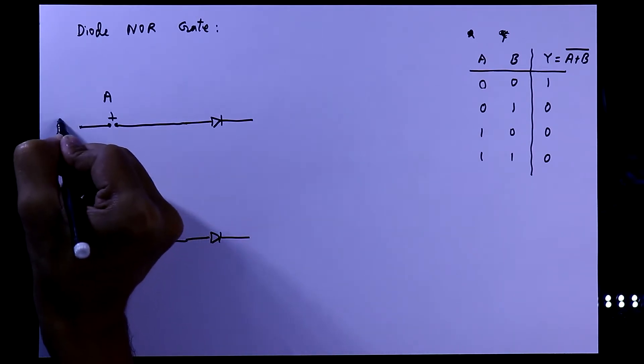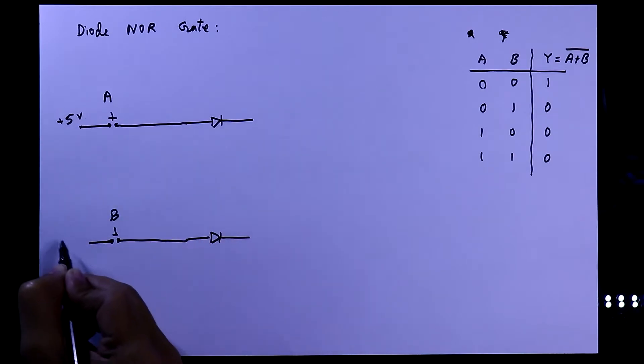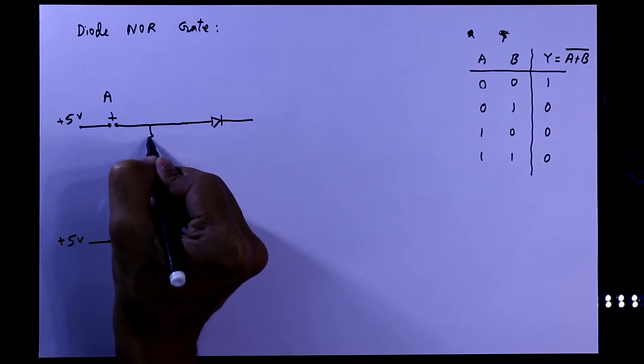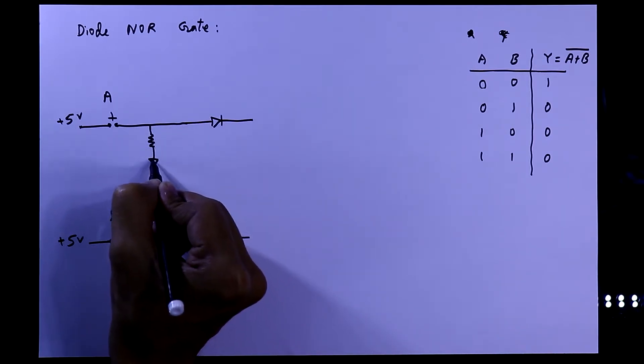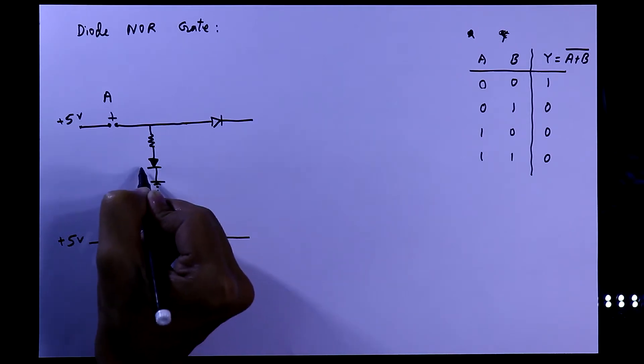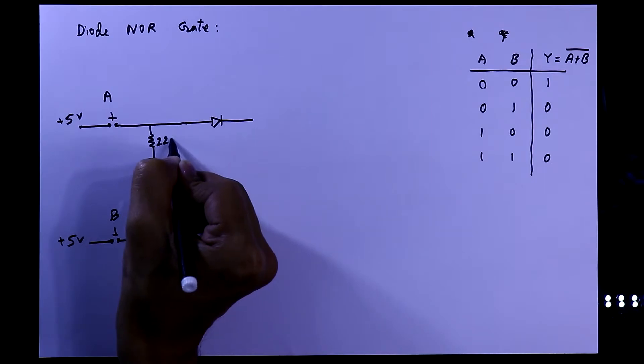Other side of the switch will provide high signal that is plus 5 volt. To see the input we will connect an LED. So here it is current limiting resistor for the LED and the negative pin of the LED should be connected to the ground. It is 220 ohms.